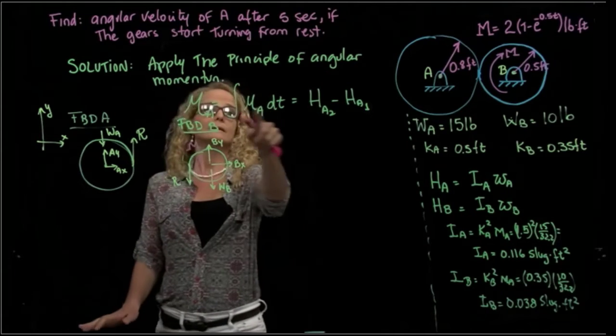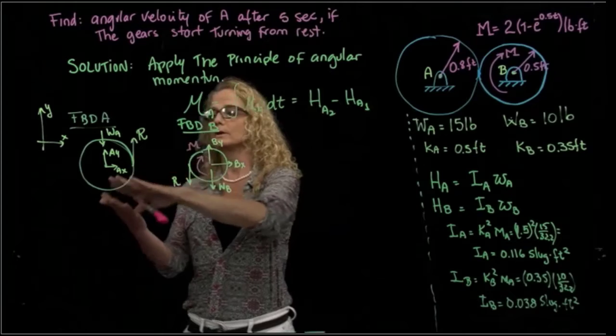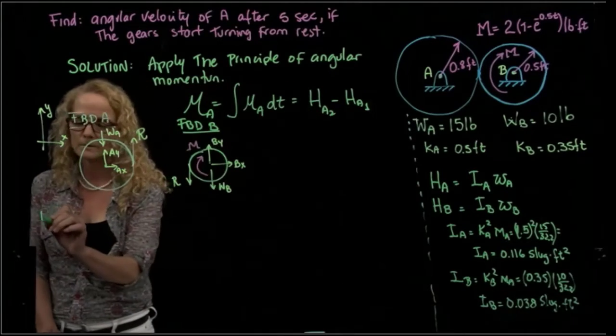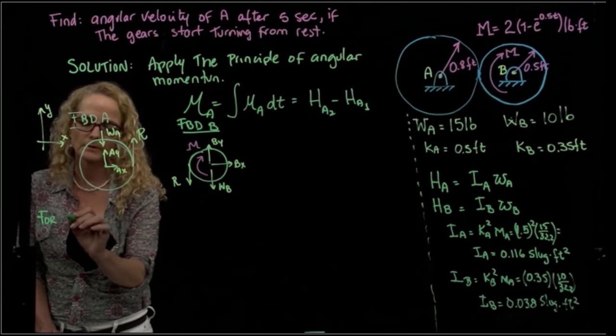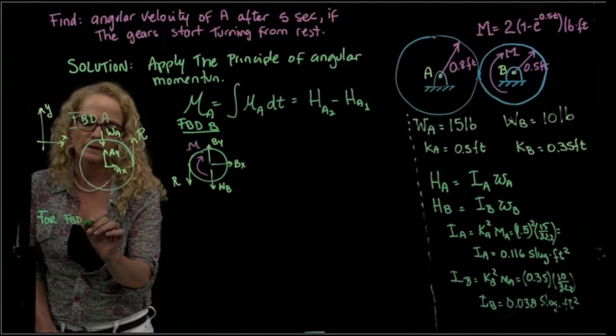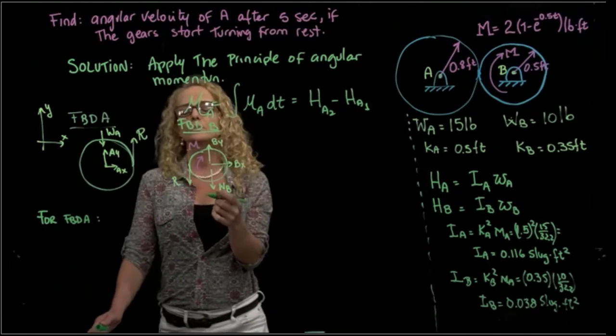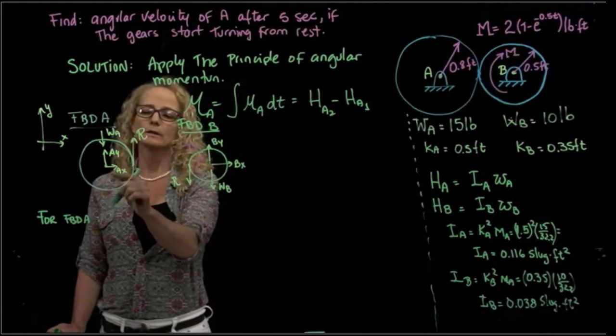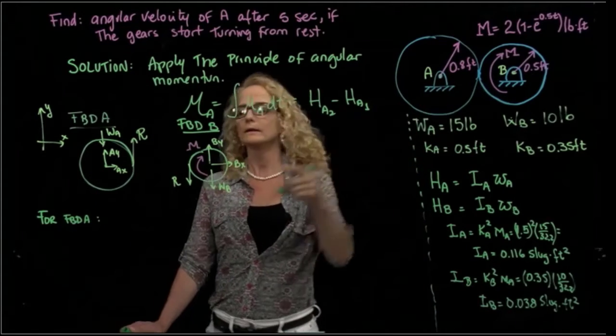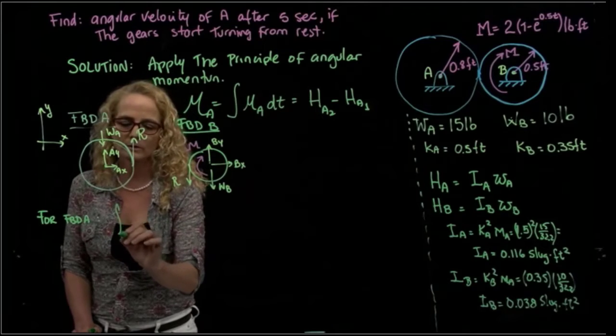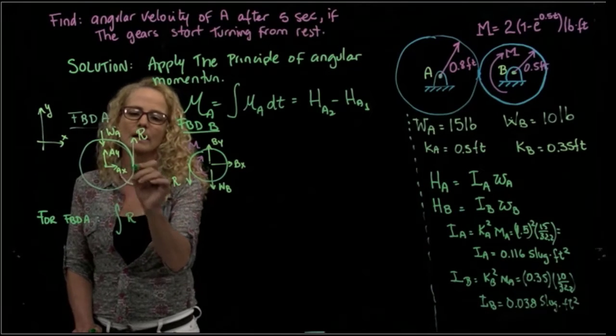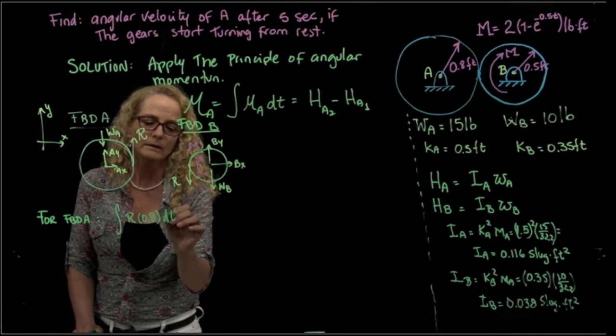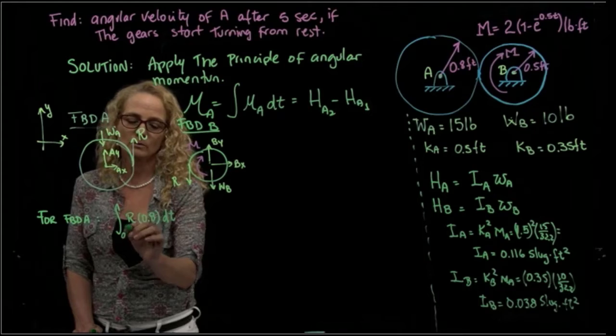So I will apply this equation, the same equation for gear A and the same equation for gear B. So for free body diagram A, we have what moments do we have that apply to that? Only the reaction, right? So we have the radius of that gear, so it will be the integral of that reaction times the radius, which is 0.8 delta T from 0 to my time.